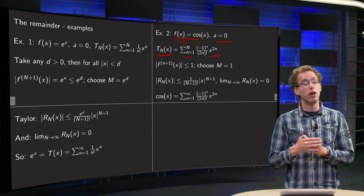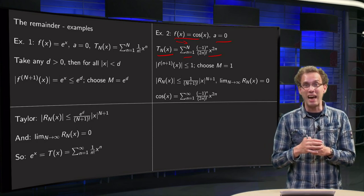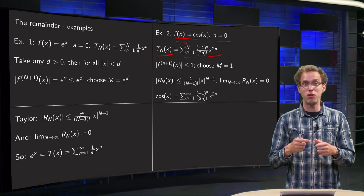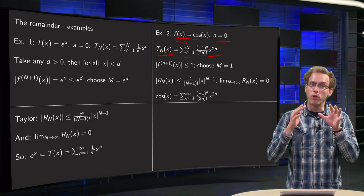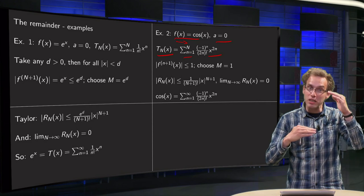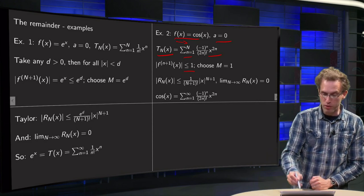Now, in order to use Taylor's inequality, we need again a bound on the N-th derivative. Well, that's nice, because the cosine becomes minus sine and minus cosine and sine, etc., but all those functions are bounded between minus 1 and 1, so the N-th derivative will be smaller or equal than 1 anyway.